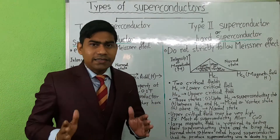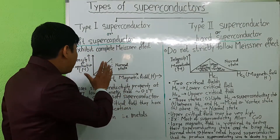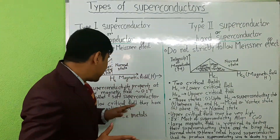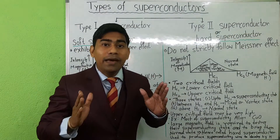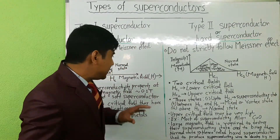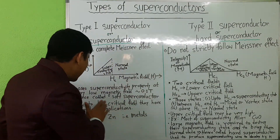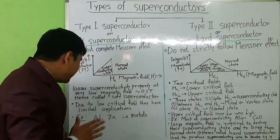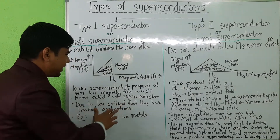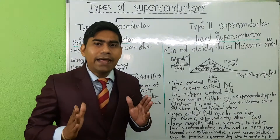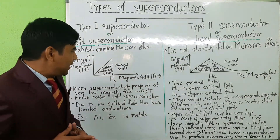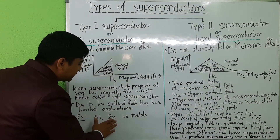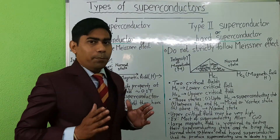Since type 1 superconductors lose their superconductivity property at very low magnetic field, they are also called soft superconductors. Due to this low critical field, they have very limited applications. Examples of type 1 superconductors are aluminum, zinc, etc. — that is, metals.